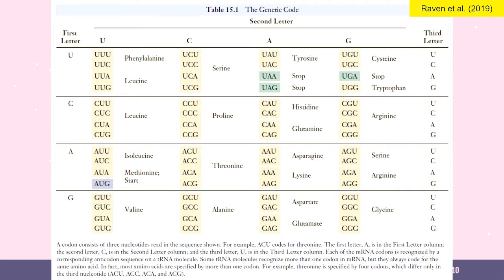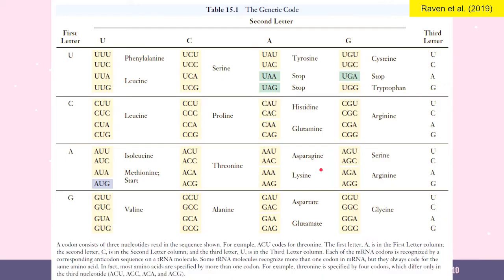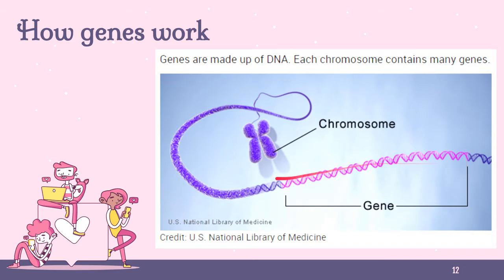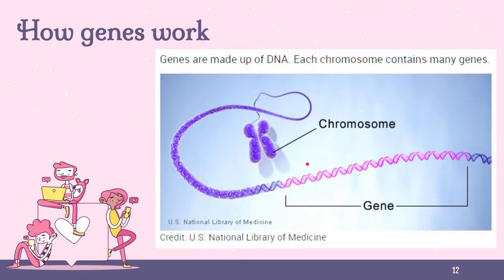A gene is a locus or region of DNA made up of nucleotides, and it is hereditary — it is the molecular unit of heredity. A gene corresponds to the basic inheritance of phenotypic traits; the transmission of genes to an organism's offspring is the basis of inheritance. A gene is the basic physical and functional unit of heredity, and that segment eventually codes for a protein. However, many genes do not code for proteins.